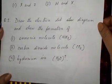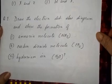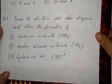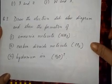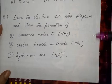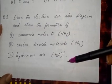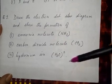Now question number 2: here you have to draw the electronic dot diagram for ammonia, carbon dioxide, and hydronium ion.